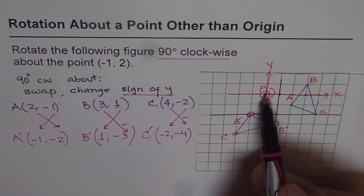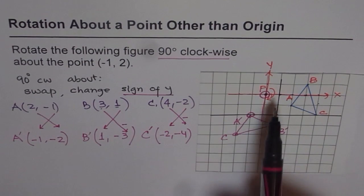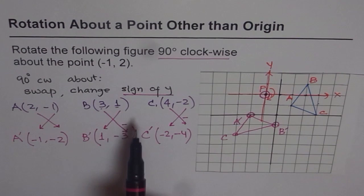So when you change the origin, the whole coordinate system changes. Then write down all your points with respect to the new coordinate system and apply the same rule.